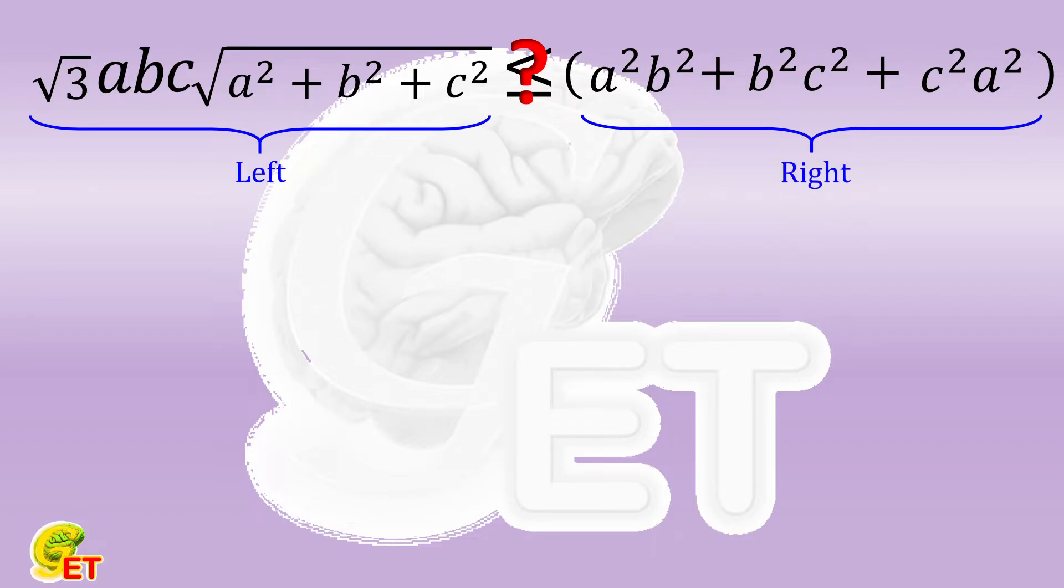Here, a challenging point is the square root on the left. So we have to square both sides.